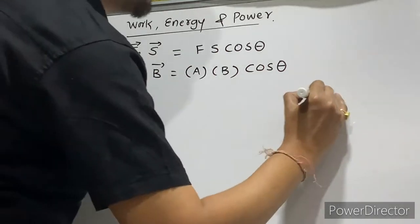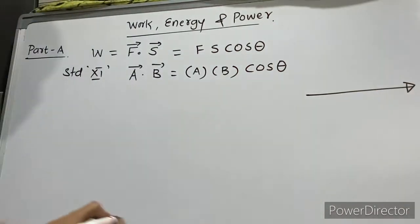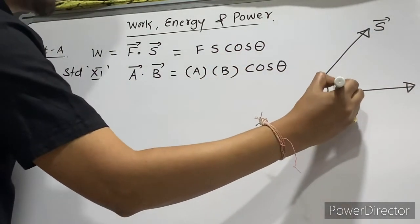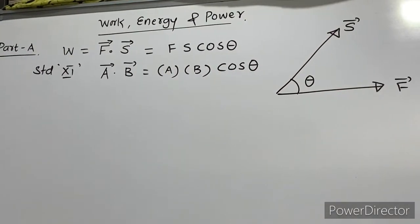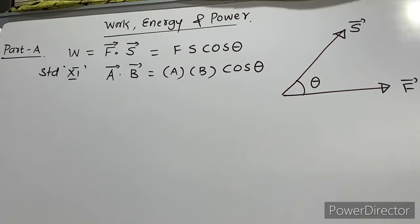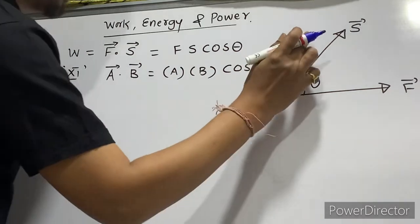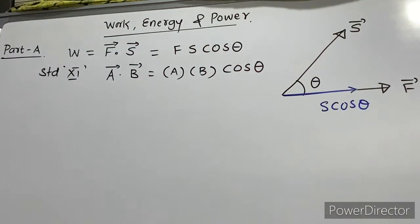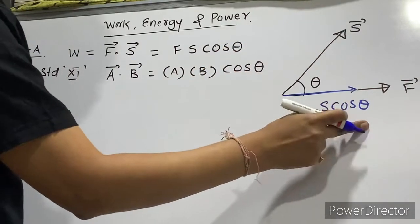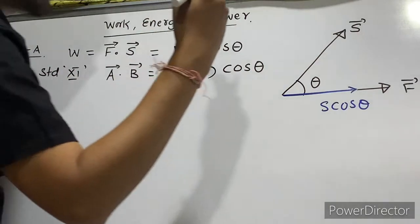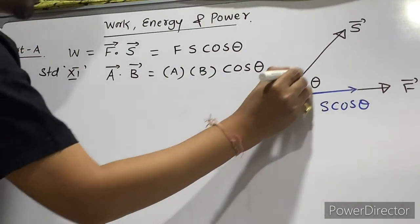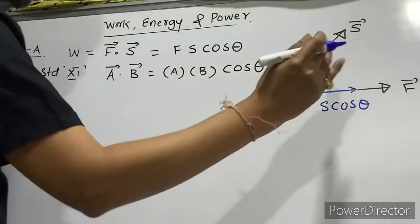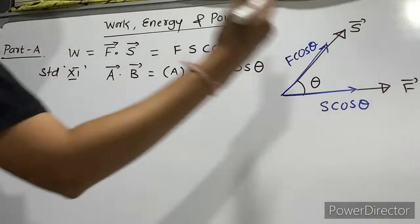Here, one vector is force and the other is displacement, and the angle between them is θ. I will split the displacement vector into two components: S cosθ is the component of displacement along the direction of force. Similarly, I will split the force vector — the component along S is F cosθ.